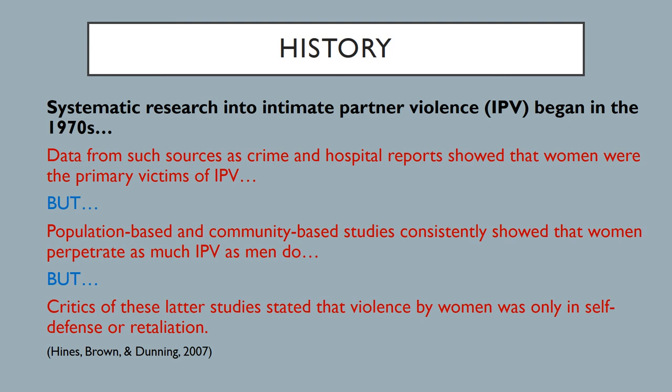We notice that crime and hospital reports paint a picture as if women are the primary victims. But when we get people to respond to surveys in an anonymous or confidential manner, we're starting to realize that victimization rates may be roughly similar across genders. Critics of the community-based studies often respond that violence by women, when they are the actual perpetrators, was actually in self-defense or retaliation, which once again diminishes the credibility of the male victim.